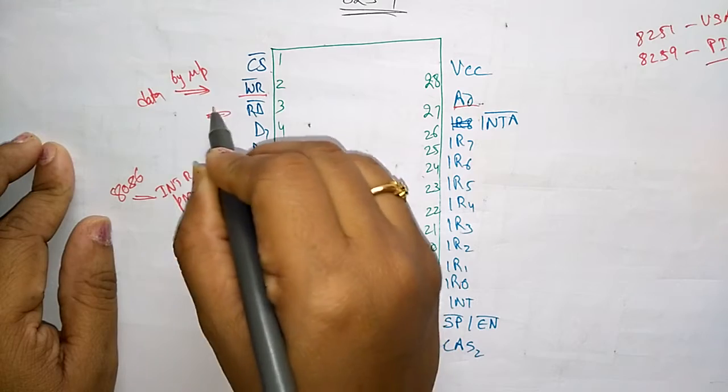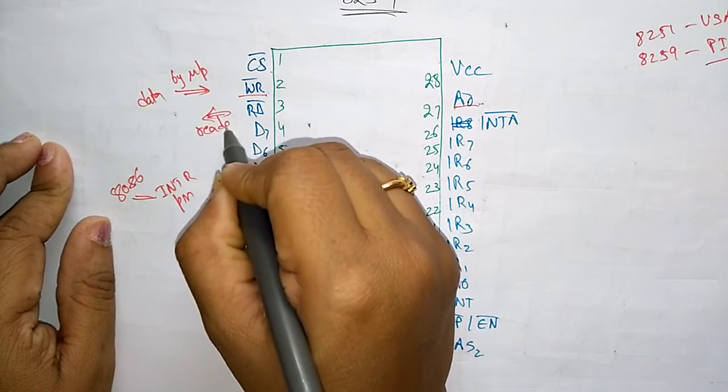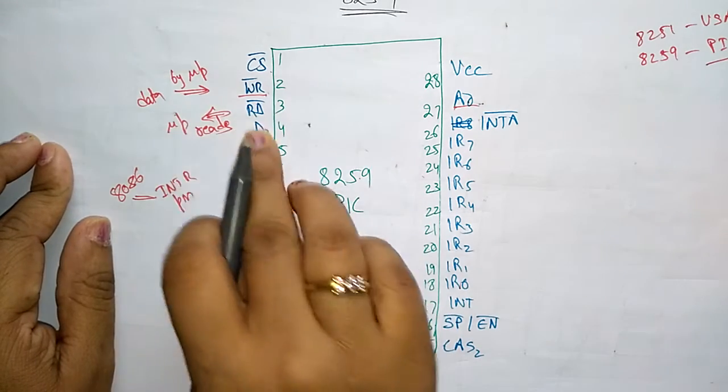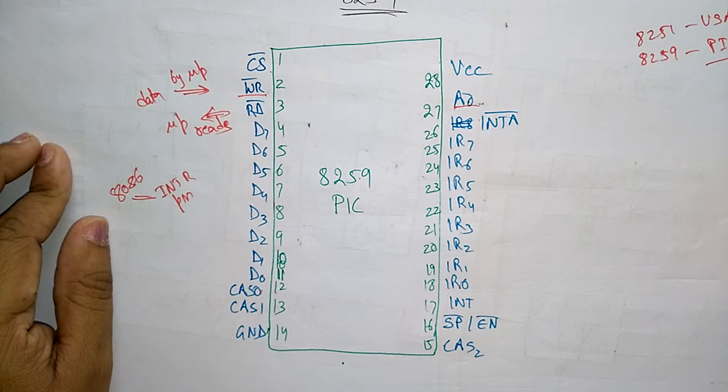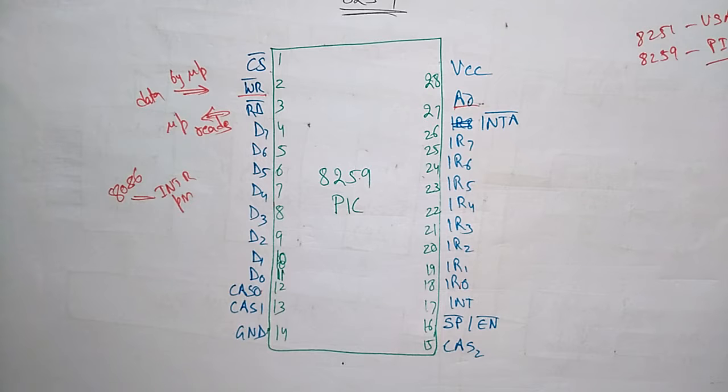Reading means microprocessor reads the status of 8259 by asserting this signal and reading the data lines.